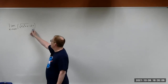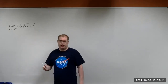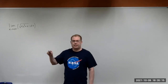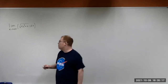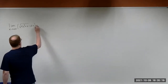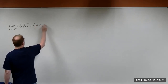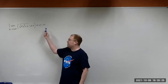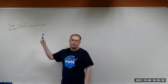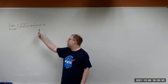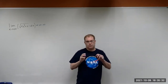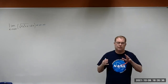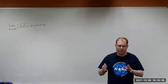Likewise, we have 2x here, which is also an increasing function. So as x approaches infinity, 2 times x will also approach infinity. Putting these together, we end up getting infinity minus infinity. This is one of the forms of the indeterminate values. Infinity minus infinity is not equal to 0, because infinity is more of a conceptual kind of value.